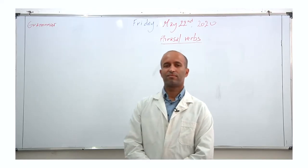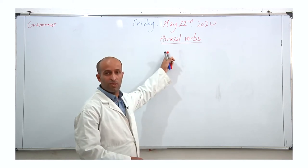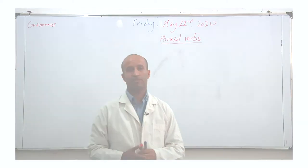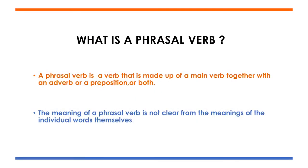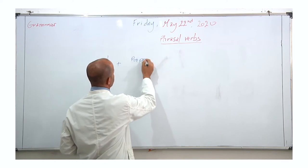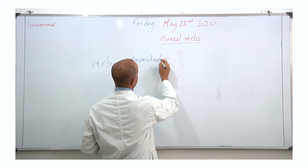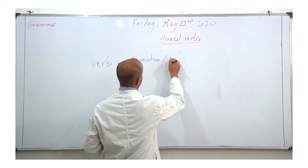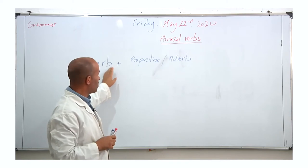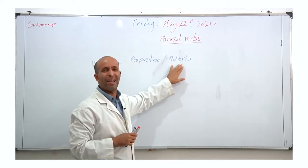Welcome to a grammar lesson on phrasal verbs. First, we need to explain what a phrasal verb is. A phrasal verb is a verb that is made of a main verb together with an adverb or a preposition. A verb is made of a preposition or another verb, or both.